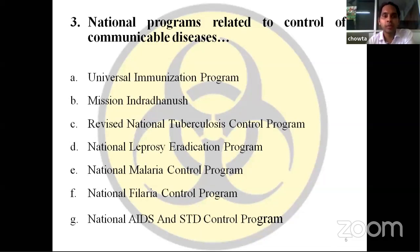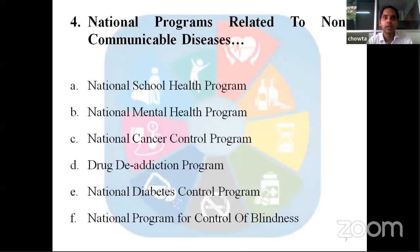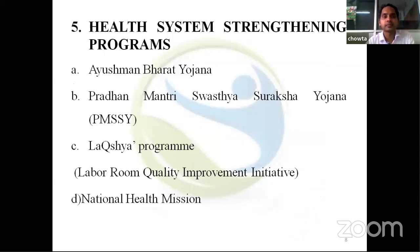National programs related to control of communicable diseases: universal immunization program, Mission Indradhanush, revised national tuberculosis control program, national leprosy eradication program, national malaria control program, national filaria control program, national AIDS and STD control program. National programs related to non-communicable diseases: national school health program, national mental health program, national cancer control program, drug de-addiction program, national diabetes control program, national program for the control of blindness. Health system strengthening programs: Ayushman Bharat Yojana, Pradhan Mantri Swasthya Suraksha Yojana, Lakshya program, and national health mission.